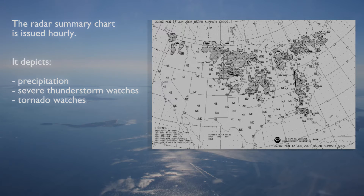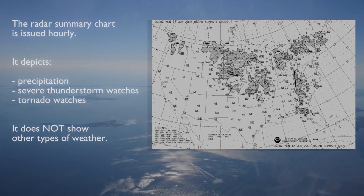The chart displays precipitation only. It does not show clouds. So a clear area on the Radar Summary Chart is not necessarily clear of weather — there was just no precipitation detected by radar in that area.